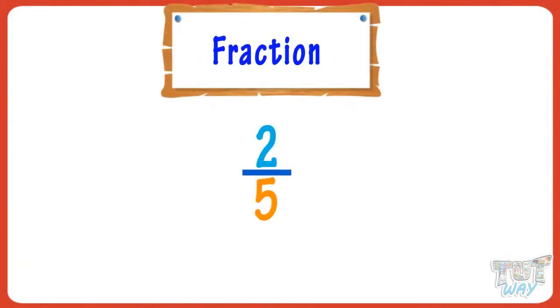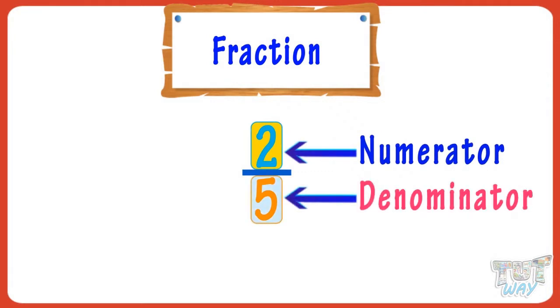We know fractions are numbers where there are two numbers separated by a line. The number above the line is called numerator, and the number below the line is called denominator.